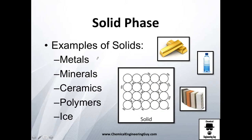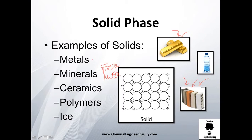Some examples of solids are metals such as gold, silver, nickel, and titanium; minerals such as iron minerals or nickel minerals containing CO₂ or SO₄; ceramics like glass or Pyrex glass; and polymers such as polyethylene or polyester, which are generally solid due to their very long chain structures. For water, the solid example would be ice.